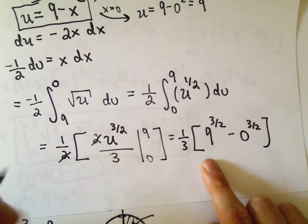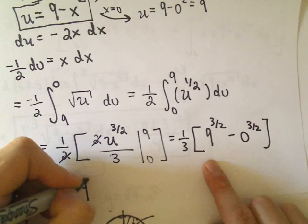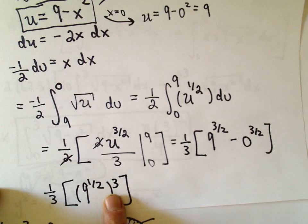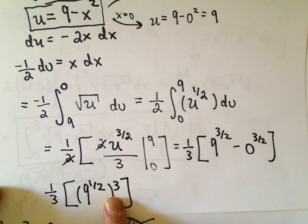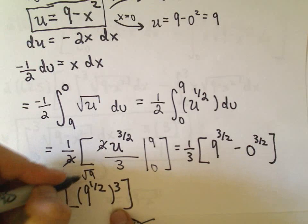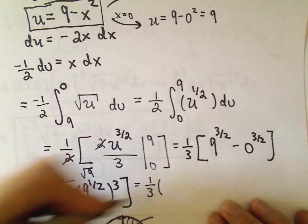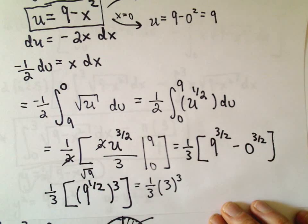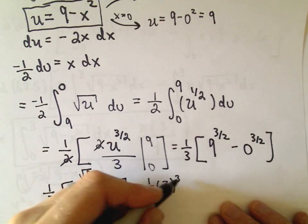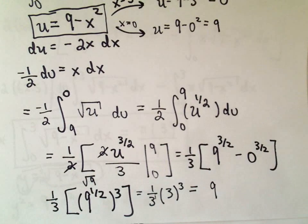The 2's cancel, leaving one-third out front. We then have 9 to the 3/2 minus 0 to the 3/2. To compute 9 to the 3/2, rewrite it as (9 to the one-half) cubed. Since 9 to the one-half is the square root of 9, which is 3, we get one-third times 3 cubed, which is one-third times 27, giving us 9.